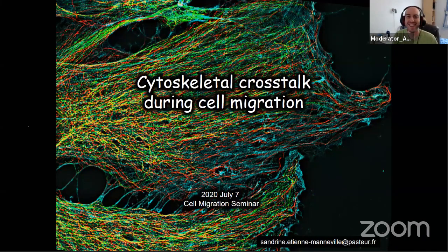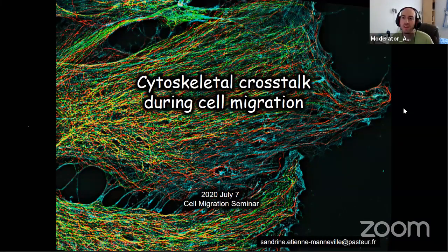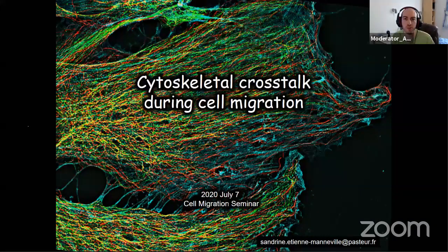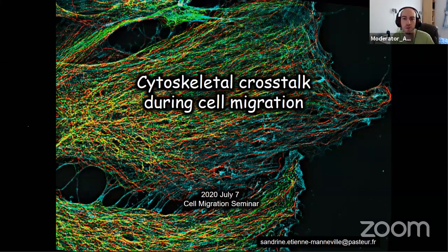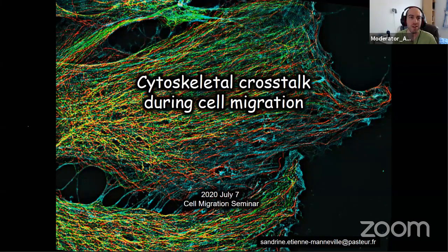Okay, let's get started. Thanks everyone for coming. This is seminar number nine, and today's speaker is Sandrine Etienne-Manneville. Sandrine is Director of Research at CNRS and heads the Department of Cellular Dynamics and Physiology and Pathology at the Institut Pasteur. Sandrine is an EMBO member and has received several awards for her work, which is focused on cell polarization and migration, especially using astrocytes as a model system. Her work has demonstrated that adhesion molecules and major tumor suppressors regulate polarity pathways, and more recently she's investigated how microtubules and intermediate filaments control polarization. Today she'll be talking about cytoskeleton cross-talk during cell migration.